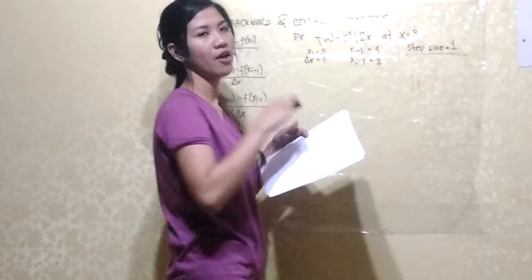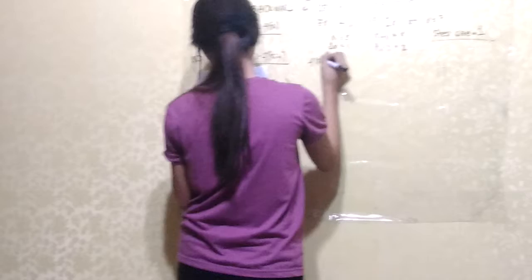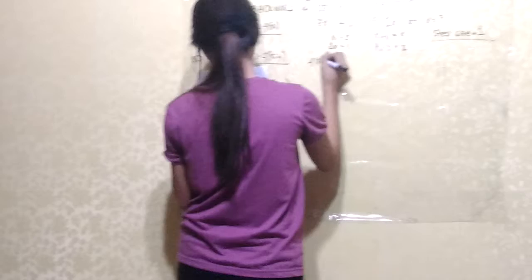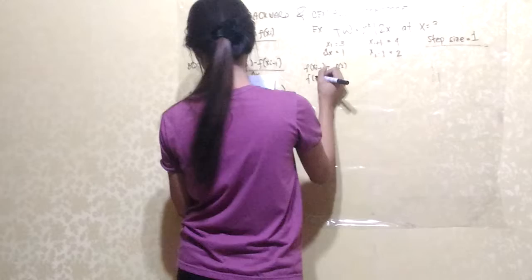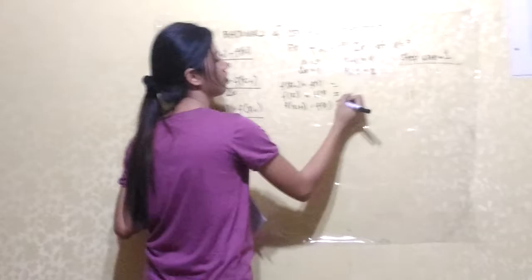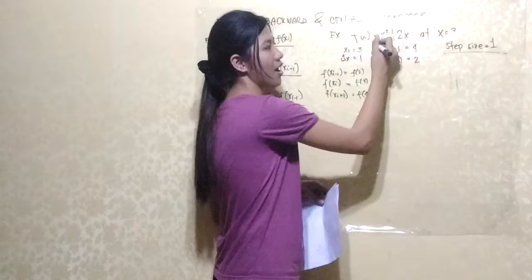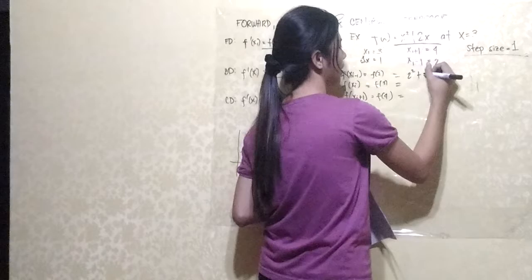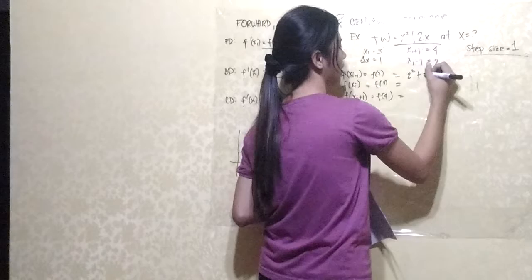I have already computed these values and I'll write them down. We have f(x sub i minus 1), which is f(2); f(x sub i), which is f(3); and f(x sub i plus 1), which is f(4). Substituting into our equation x squared plus 2x: for x equals 2, that is 2 squared plus 2 times 2, which gives 4 plus 4.